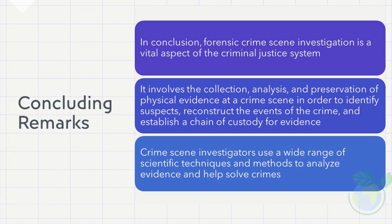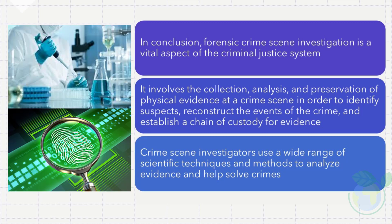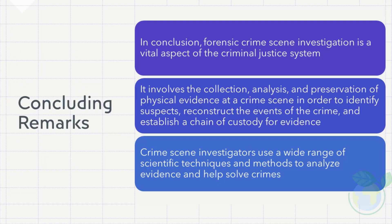In conclusion, forensic crime scene investigation is a vital aspect of the criminal justice system. It involves the collection, analysis, and preservation of physical evidence at a crime scene in order to identify suspects, reconstruct the events of the crime, and establish a chain of custody for evidence. Crime scene investigators use a wide range of scientific techniques and methods to analyze evidence and help solve crimes. With the ever-evolving technology and new scientific methods, forensic crime scene investigation will continue to play a critical role in solving crimes and maintaining justice.